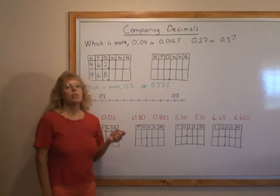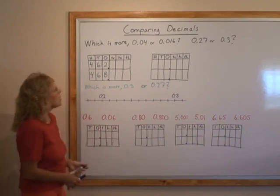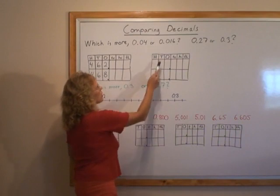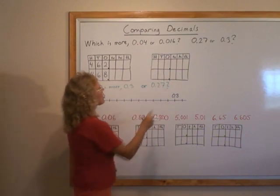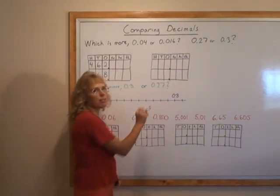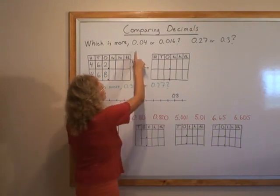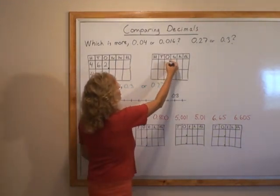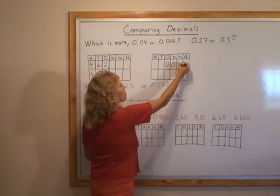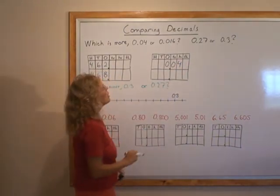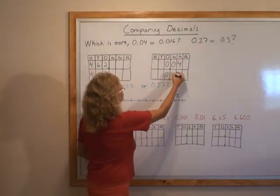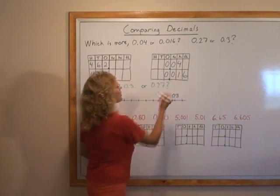The same principle is used when comparing decimals. And I'm going to write these two decimals here in this place value chart. I have my decimal point ready here right after the ones place. So 0.04 is 4 hundredths.